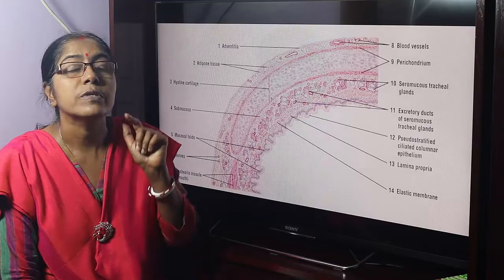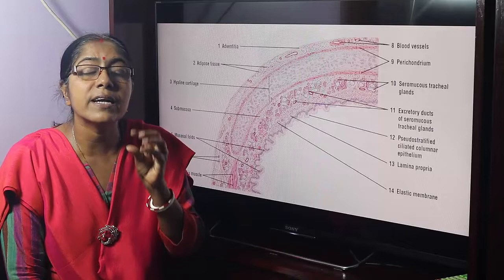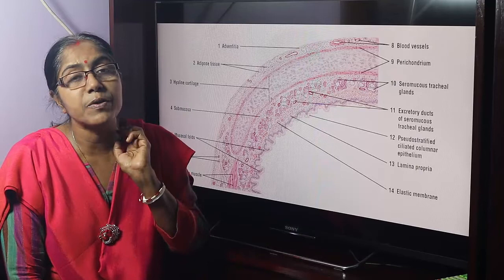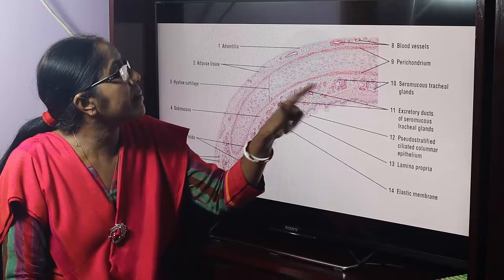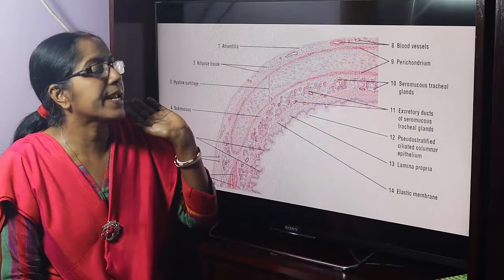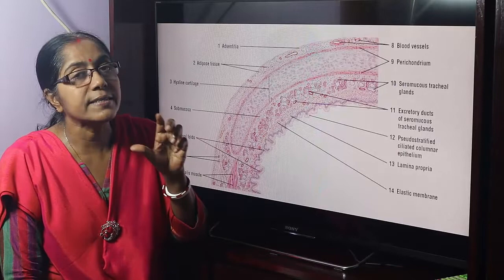The submucosa shows seromucous glands. What do we mean by a seromucous gland? It is a mixed gland. According to the nature of secretion, glands are of three types: serous gland, mucous gland, and seromucous gland. Seromucous gland contains both serous and mucous acini. This is the serous acini; it can have a serous demilune. The submucosa contains numerous blood vessels and is loose connective tissue.